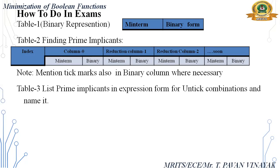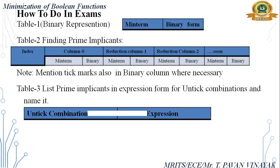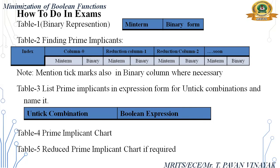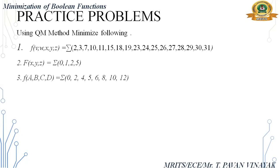In Table 3, list the prime implicants, which are unique combinations, and name them. Write the boolean expression, then prepare the prime implicant chart and reduced prime implicant chart if required. Do practice problems using the QM method.